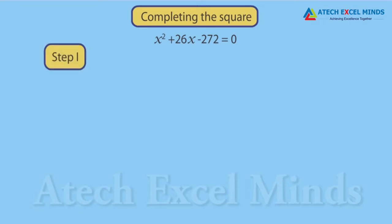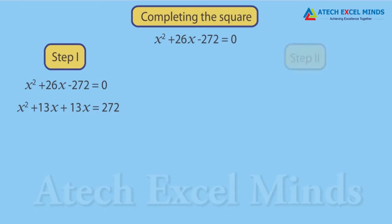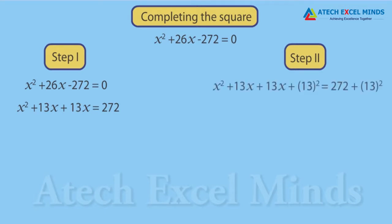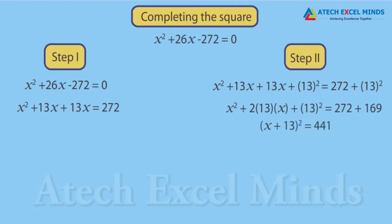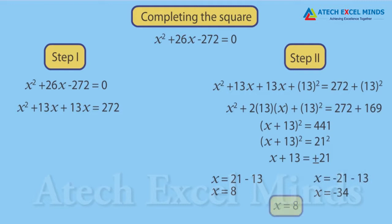In this method, first transpose the constant term to the right-hand side and split the middle term into two equal parts. Here, 26x is split as 13x and 13x. Step 2: Add the square of 13 on both sides and solve to get two values of x. The left-hand side resembles the standard identity a² + 2ab + b² = (a + b)², so LHS becomes (x + 13)² and RHS becomes 21². Since age can't be negative, x = 8 years.